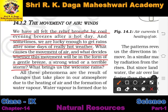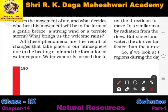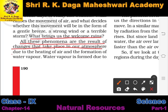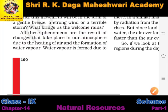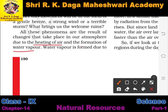What causes the movement of air, and what decides whether the air will move as a gentle breeze, a strong wind, or a terrible storm? What brings us welcome rains? All these phenomena are the result of changes that take place in our atmosphere due to the heating of air and the formation of water vapor.